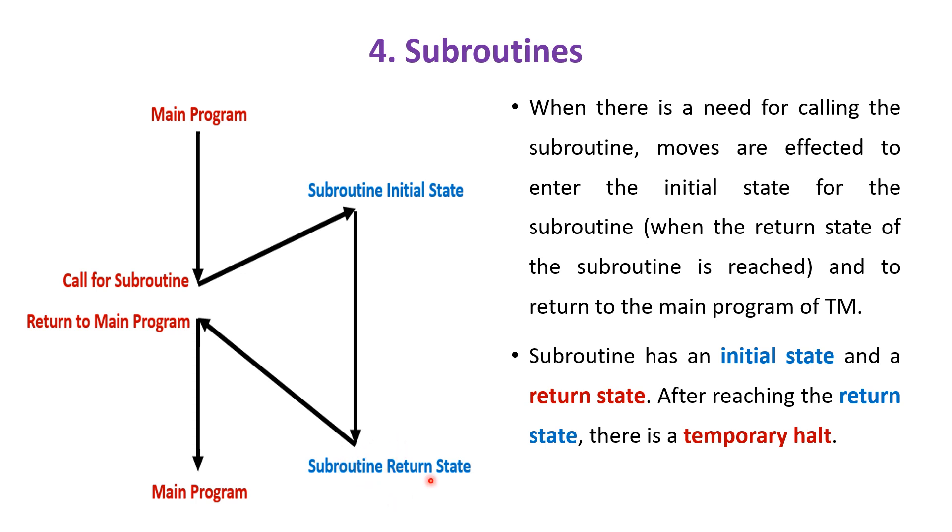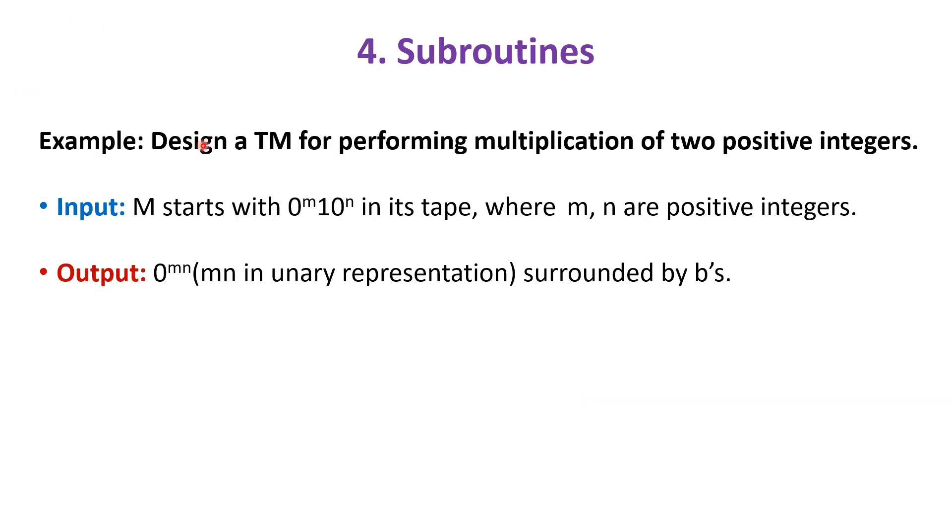For example, let us design a Turing machine for performing multiplication of two positive integers. The input is 0^m 1 0^n in its tape, where m and n are positive integers, and the output is 0^mn surrounded by blanks.